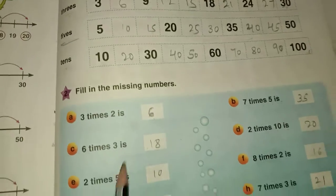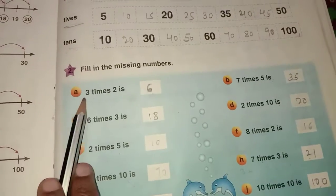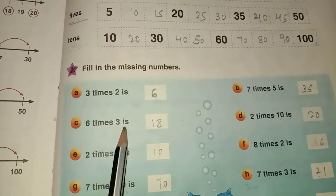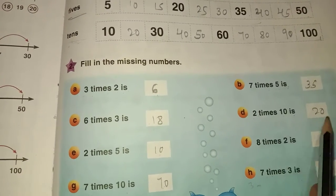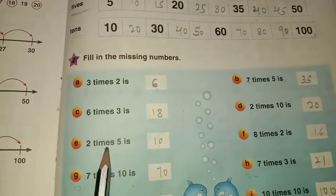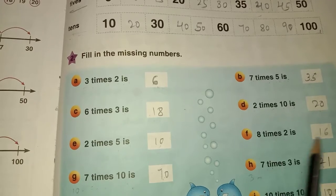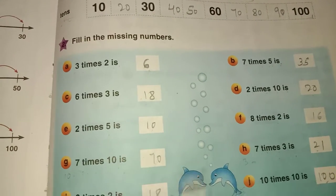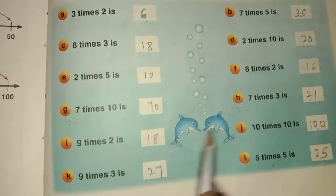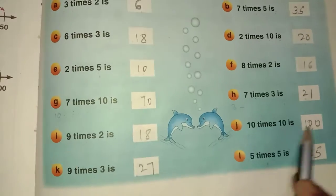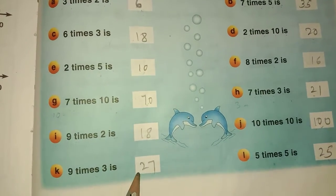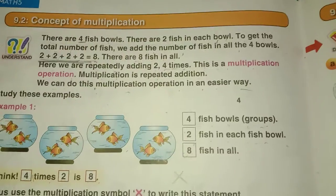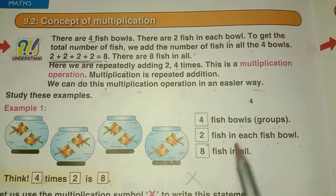Fill in the missing numbers — we have already studied these: 3 times 2 is 6, 7 times 5 is 35, 6 times 3 is 18, 2 times 10 is 20, 2 times 5 is 10, 8 times 2 is 16, 7 times 10 is 70, 7 times 3 is 21, 9 times 2 is 18, 10 times 10 is 100, 9 times 3 is 27, 5 times 5 is 25.